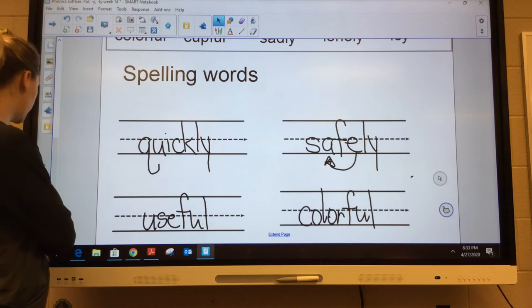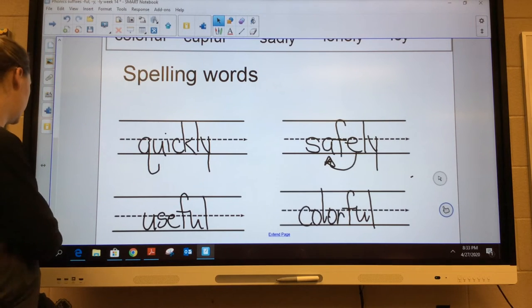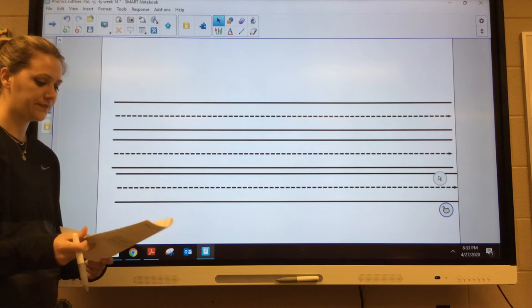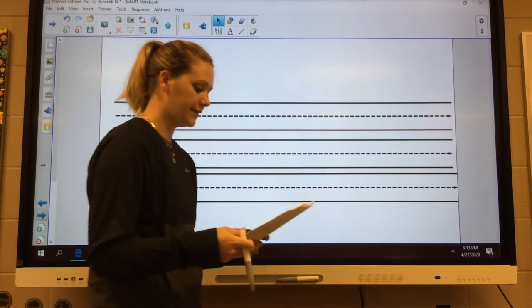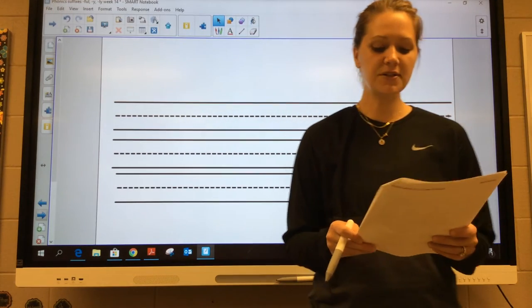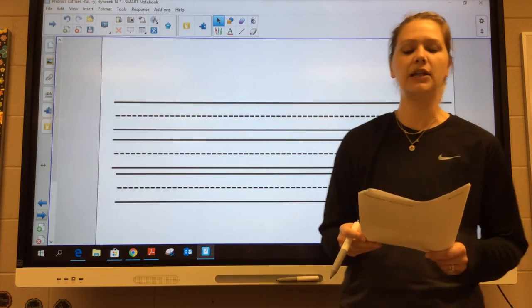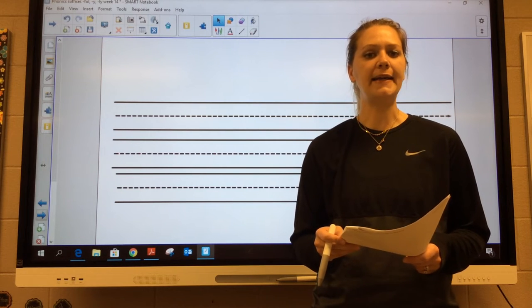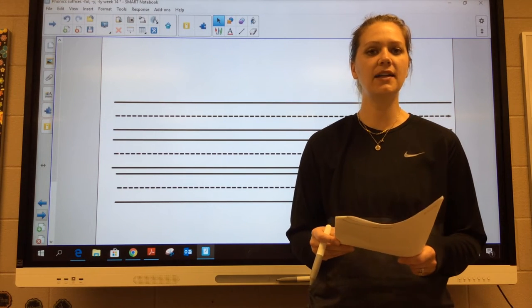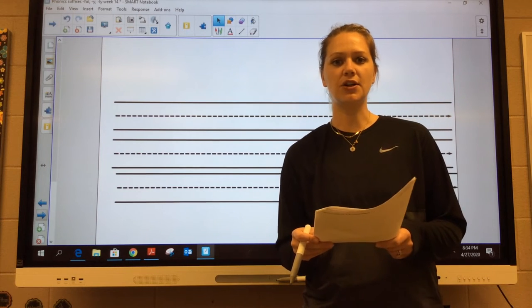And when you're done, we're going to end today with our maybe sentence. Our sentence for today is going like this: my little sister sat quietly in church. My little sister sat quietly in church. Go ahead and start writing. My little sister.